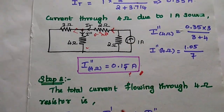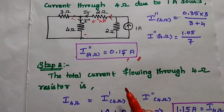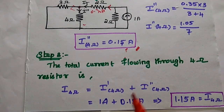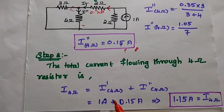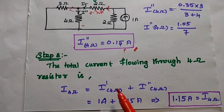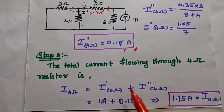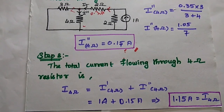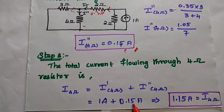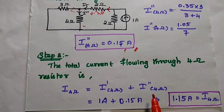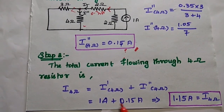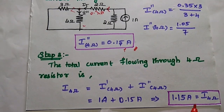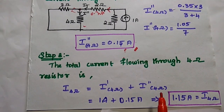In the last step, we find the total current flowing through this 4 ohm resistor by adding the current due to the voltage source and the current due to the current source: I dash + I double dash = 1 + 0.15 = 1.15 ampere. This is the final answer.